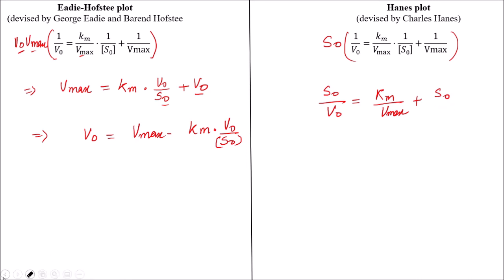We can write this constant and variable term like 1 by V max. So we have got two different equations just by differences in multiplying these two terms, V0 V max and S0 respectively in Eadie-Hofstee plot and Hanes plot.